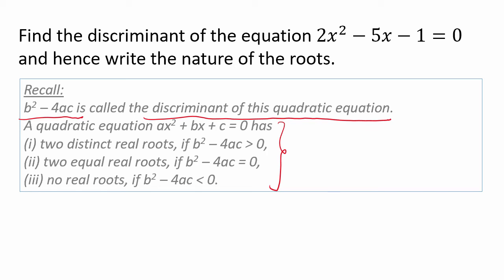If we solve this problem, for the equation 2x² - 5x - 1 = 0, we have a = 2, b = -5, and c = -1.